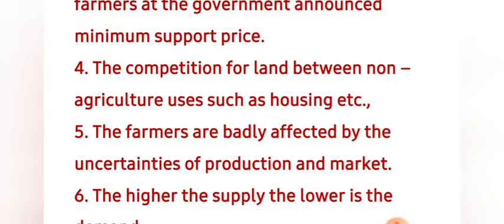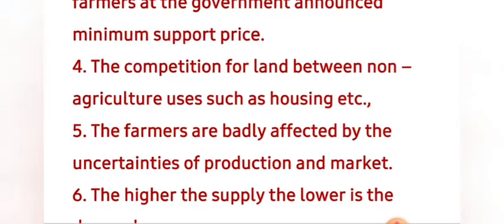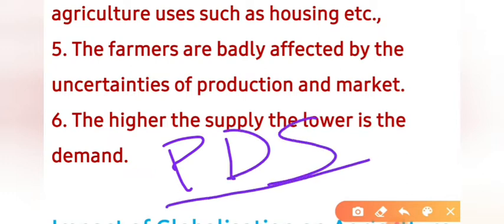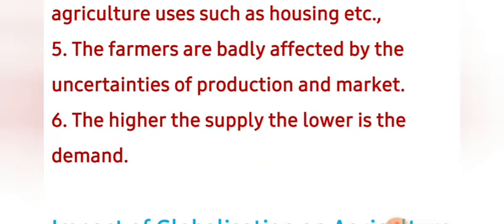There is a big competition for land between non-agricultural uses such as housing. Farmers are badly affected by the uncertainties of production and market — the higher the supply, the lower the demand. All these reasons are causing suicides among farmers. Further, the Public Distribution System (PDS) — which during lockdown has been helping a lot — provides rations to those who are helpless.